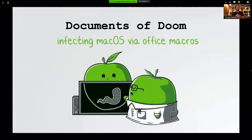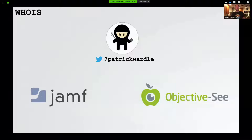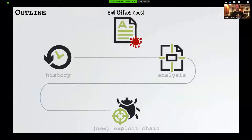Welcome to my talk. I'm stoked to be virtually presenting from lovely Hawaii. Today, let me introduce myself and then we'll dive into what we're going to be talking about. My name is Patrick Wardle. I am a principal security researcher at Jantz and the creator of the Mac security website and tool suite Objective-C. Today we're going to be talking about malicious documents, those specifically targeting macOS.